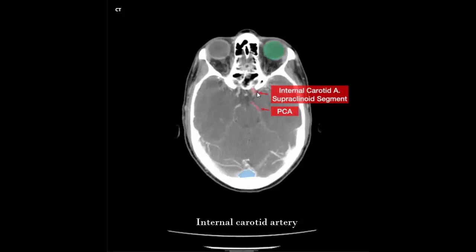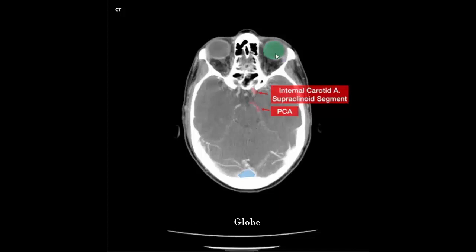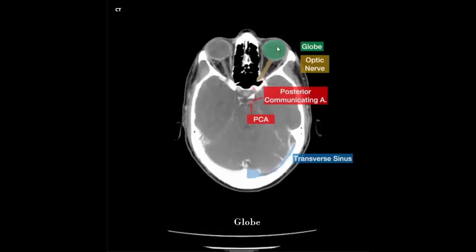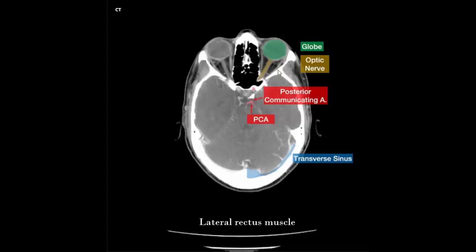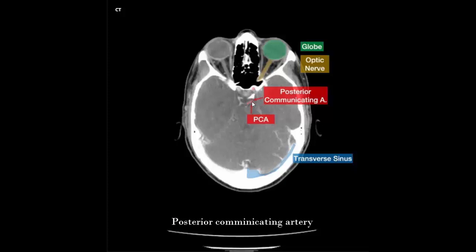Right and left internal carotid artery. Posterior cerebral artery, right and left globe. Right and left globe, right and left medial rectus muscle, right and left optic nerve. Right and left lateral rectus muscle, right and left internal carotid artery, posterior communicating artery, posterior cerebral artery, transverse sinus.